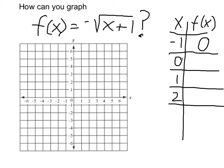Now if I put in 0 itself, put in 0 here, I get 1. The square root of 1 is 1, but because of this sign I have to make it negative 1.